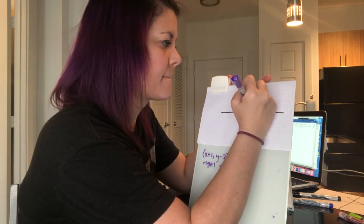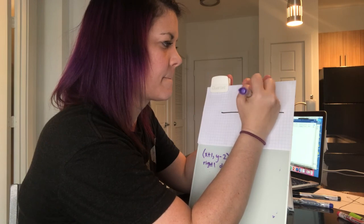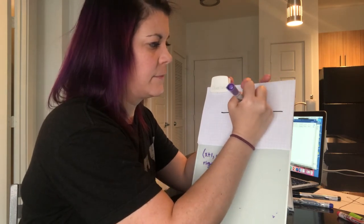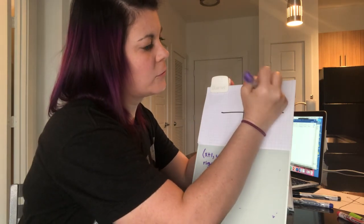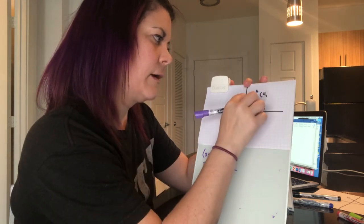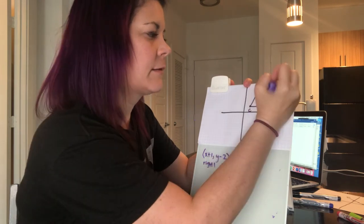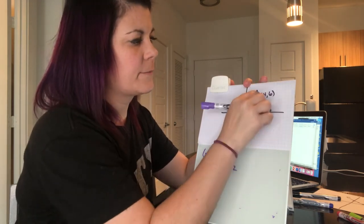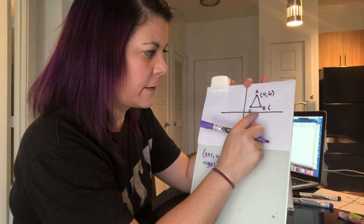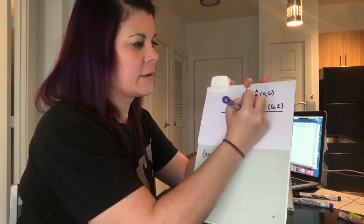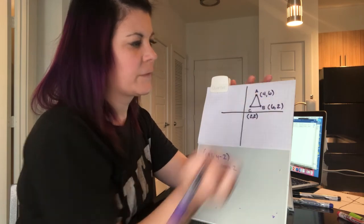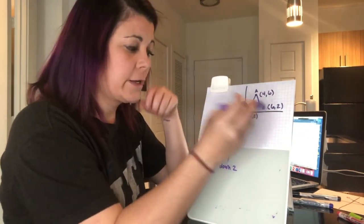I'm going to draw a triangle and write the coordinates. I'll name it A, B, C. The coordinates are: A is (4, 6), B is (6, 2), and C is (2, 2).